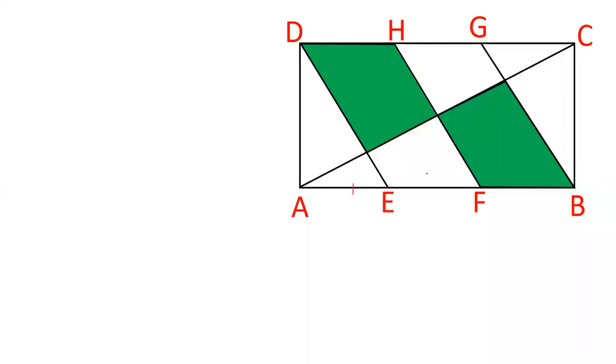As this line is divided into three equal parts and ABCD is a rectangle, so definitely EF and DH and HG and GC all these are equal which is already written in the question.